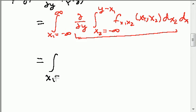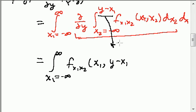So, I'm going to be left with x1 equal minus infinity to plus infinity of f of x1, x2, but evaluated at x1, y minus x1. This is this term being plugged in here.